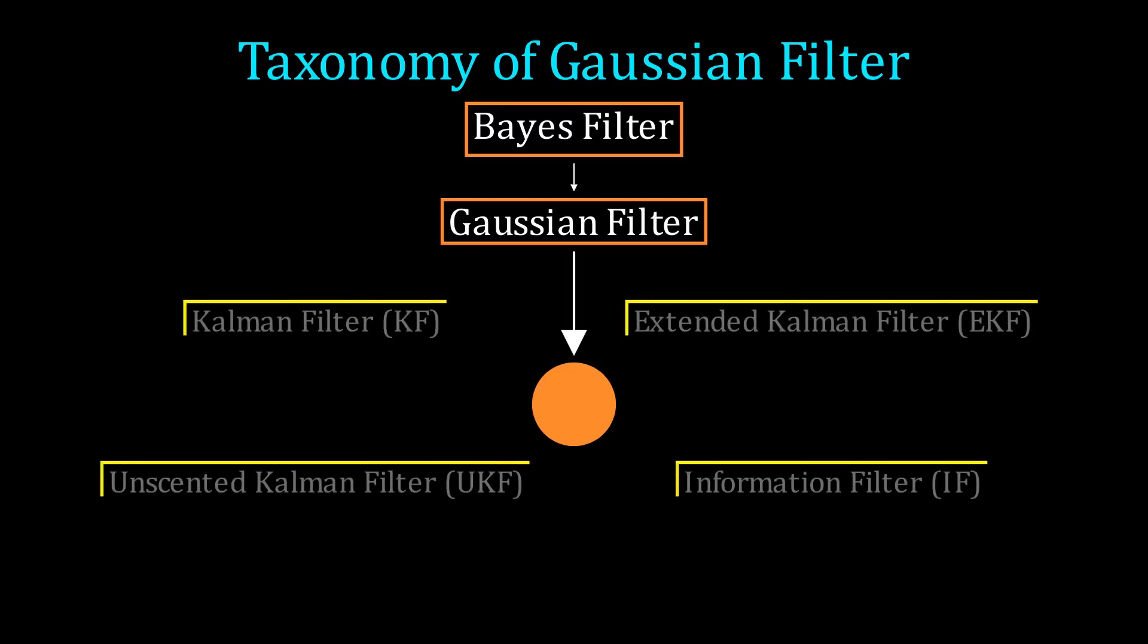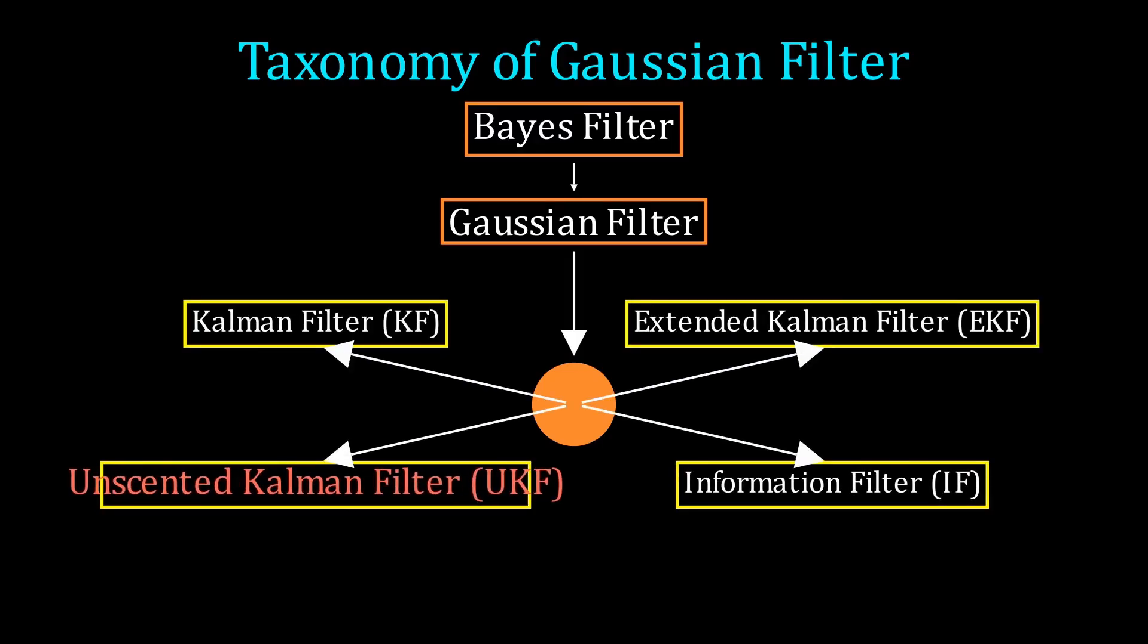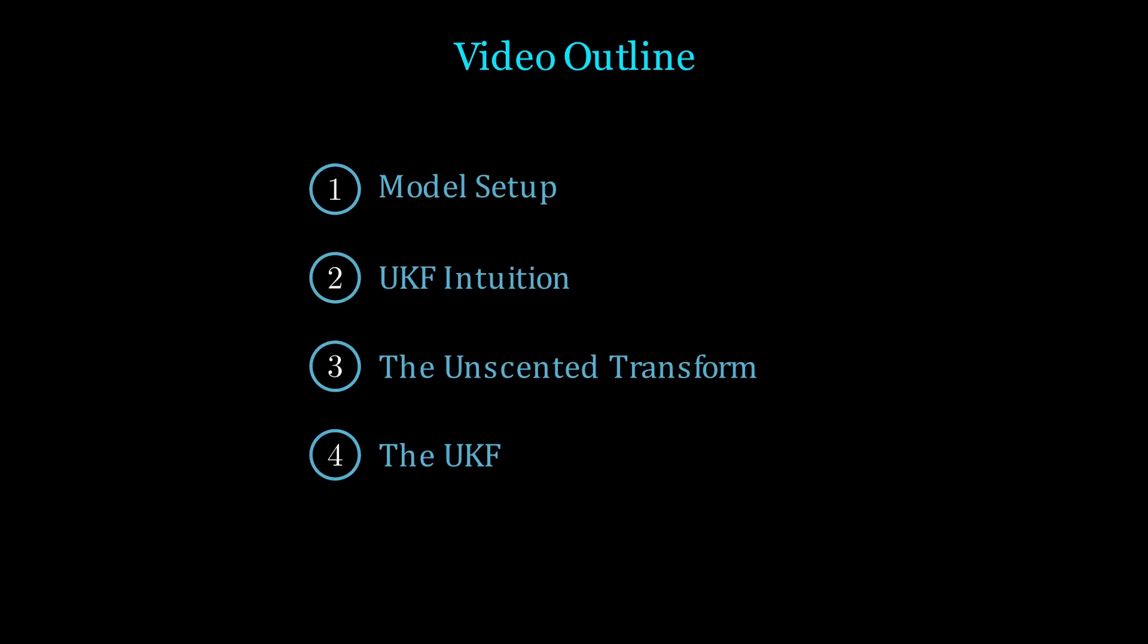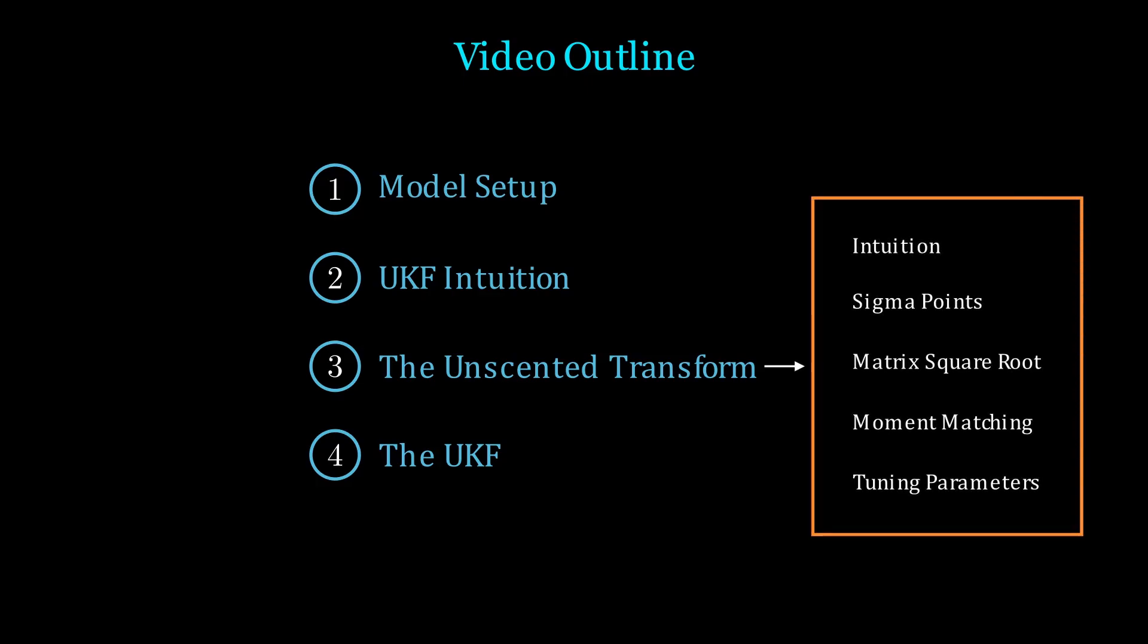Recall that the UKF is a Gaussian filter, so we approximate the probability distributions as Gaussians. To explain the UKF, we will cover the model's setup, some intuition, the unscented transform, and put it all together for the UKF. The crux of understanding lies in the unscented transform, and we have five sections for that.